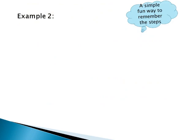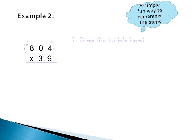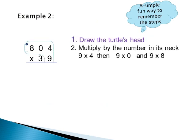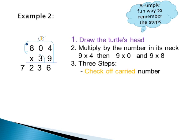Example 2: Let's multiply 804 times 39. First, draw the turtle's head. Multiply by the number in its neck: 9. 9 times 4 equals 36 — write 6 down, carry 3 to the next column. Then 9 times 0 equals 0, 0 plus 3 equals 3 — write 3 down. And 9 times 8 equals 72. Now the 3 important steps: check off carried number, draw a collar, layer turtle egg 0.